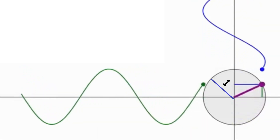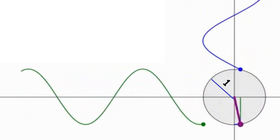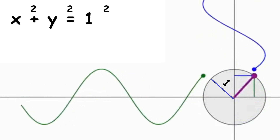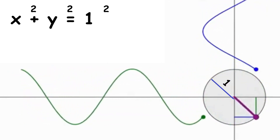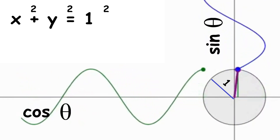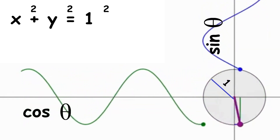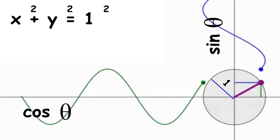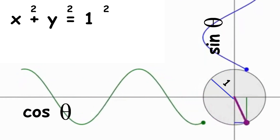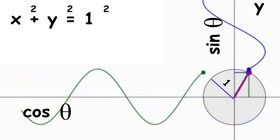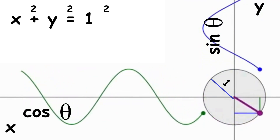One important case is the circle of radius 1 centered at the origin, given by x squared plus y squared equals 1. This is the unit circle, and it is the basis of the trigonometric functions sine and cosine. If you start at the right of the circle and travel a distance theta counterclockwise, sine theta gives your y-coordinate and cosine theta gives your x-coordinate.